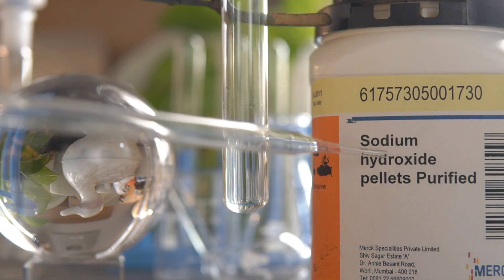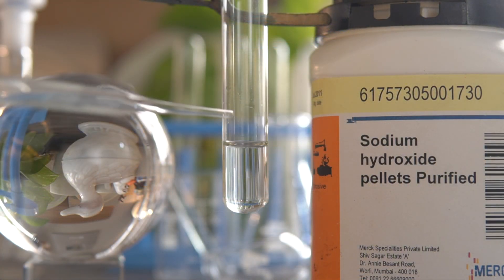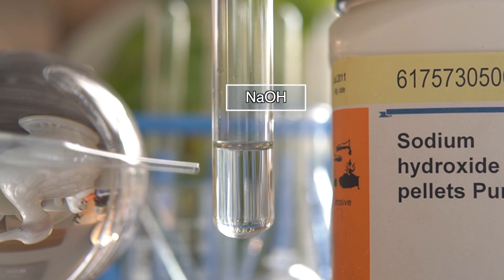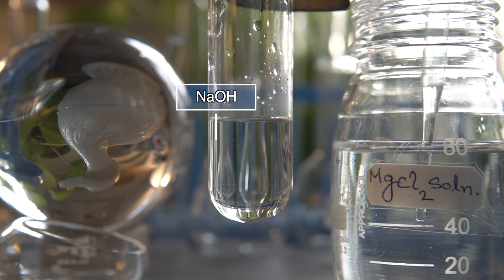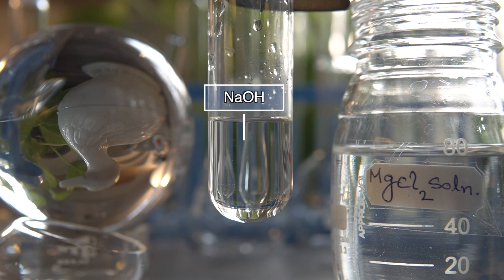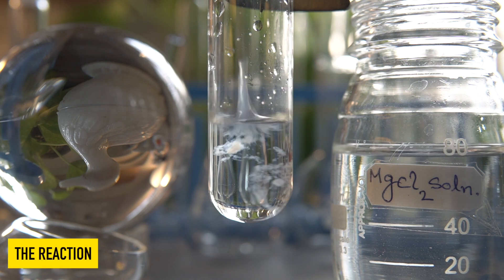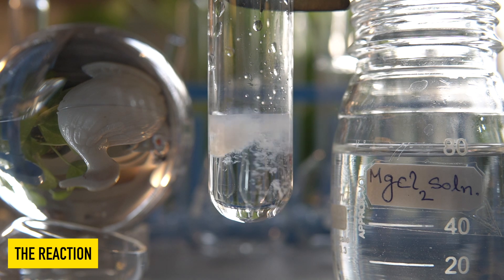Now, to initiate the reaction, we will take some amount of sodium hydroxide solution into this test tube. Now, we will add magnesium chloride solution into the sodium hydroxide solution slowly and observe the effect.